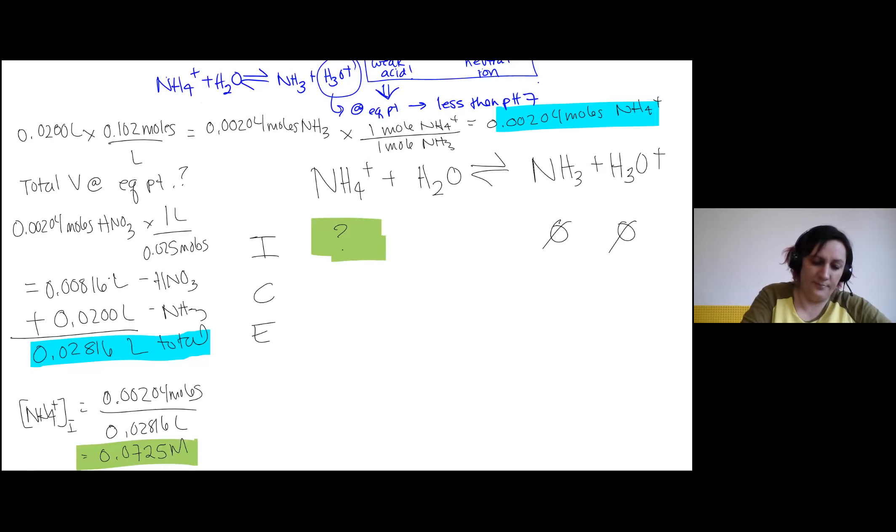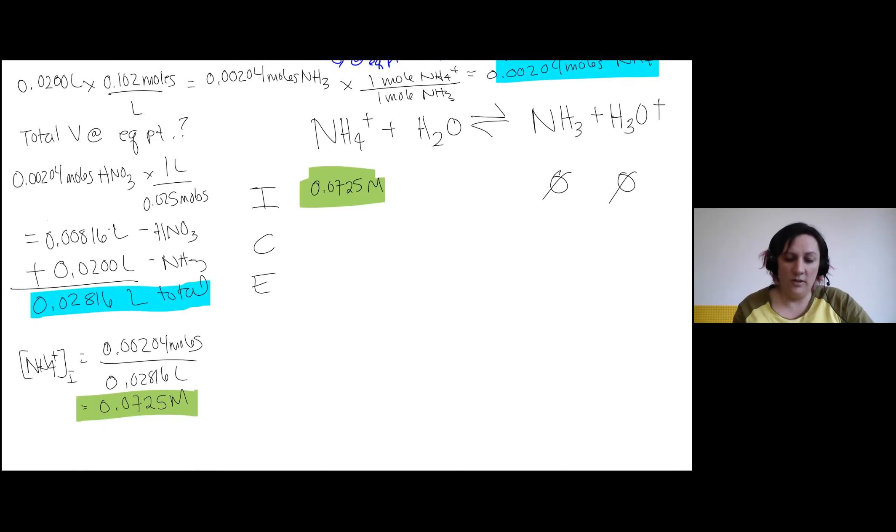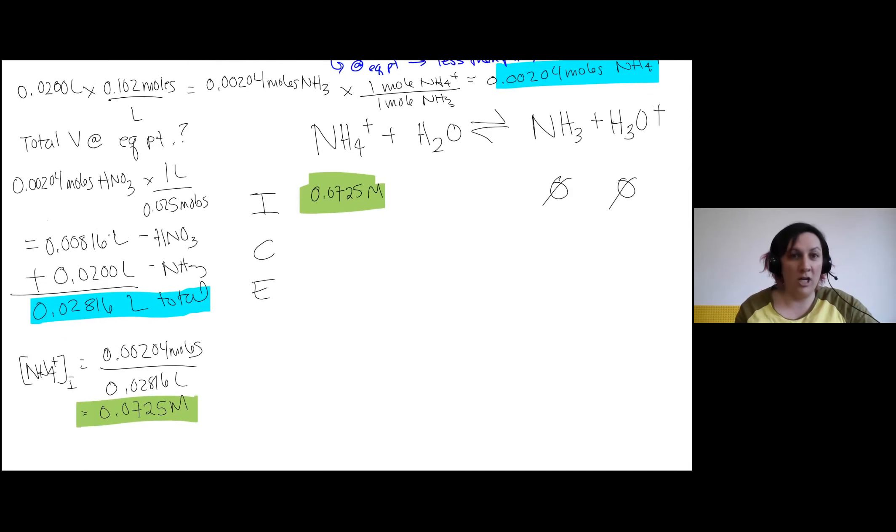So we're going to put that here, actually. And now we have the beginning of an ICE table we can use. So when we're looking at this, we're going to go through it the way we do a normal weak acid ICE table. We know that if we have no products, we're going to have the reaction move to the product side to actually reach equilibrium. So we'll be subtracting X from our reactants and adding it to our products. So we'll have an equilibrium concentration of ammonium of 0.0725 molar minus X, a concentration of ammonia of X and of hydronium ion of X.